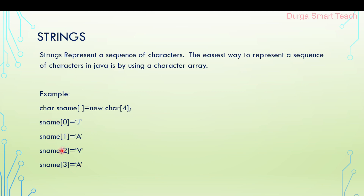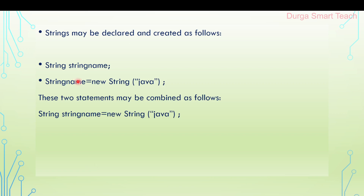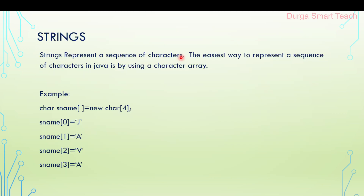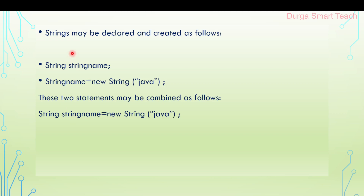Here 0, 1, 2, 3 are known as index values, and j, a, v, a are known as values. Here s_name is the array name. Next, strings may be declared and created in many forms. One is using a character array, and the next one is by using the String data type.